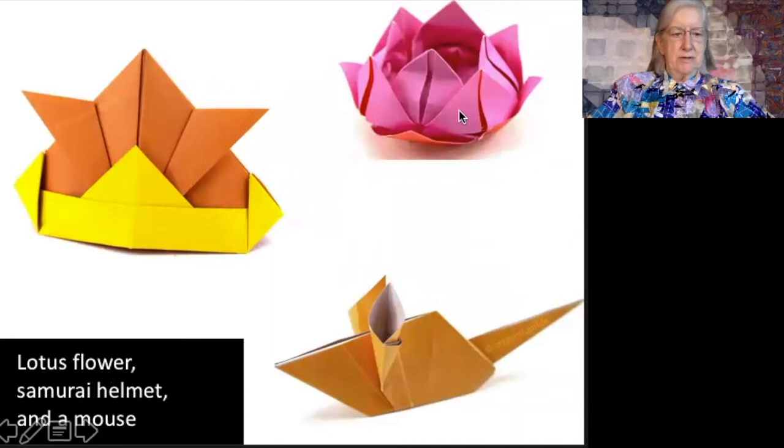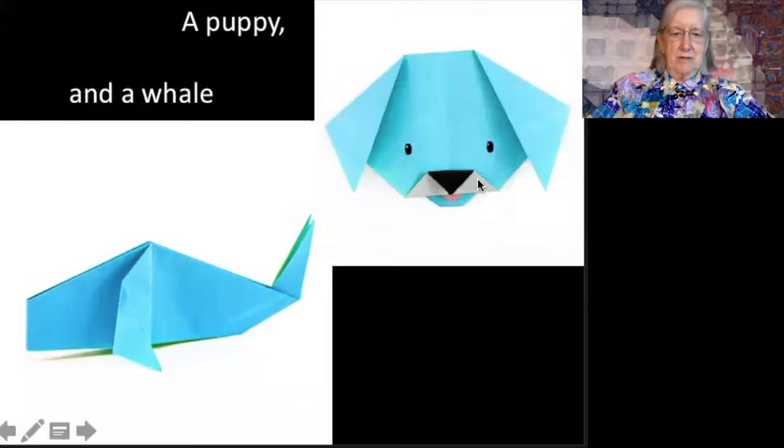Elegant traditional designs include the lotus, samurai helmet, and of course many animals like this cute little mouse, or whale, or puppy. And here someone has made sure you know it's a puppy by adding some little bits of ink to delineate the nose, the tongue, and the eyes.